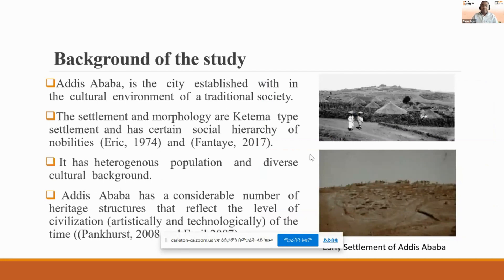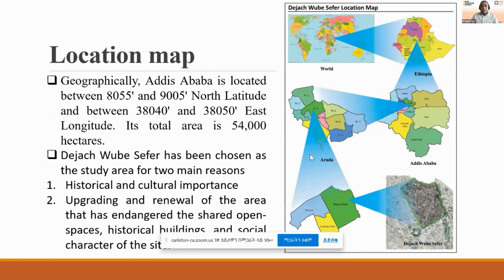Addis Ababa is an indigenous African capital with its own unique architecture and planning style. Even though it has its traditional settlement type, it has artistically and technologically developed into modern terms. The location map shows it is in the Horn of Africa. The Jachubi Saffar has been chosen because of two reasons: its historical and cultural importance, and the dynamic of upgrading and renewal practices in the city center of Addis Ababa, which has faced eviction and demolition by the government.